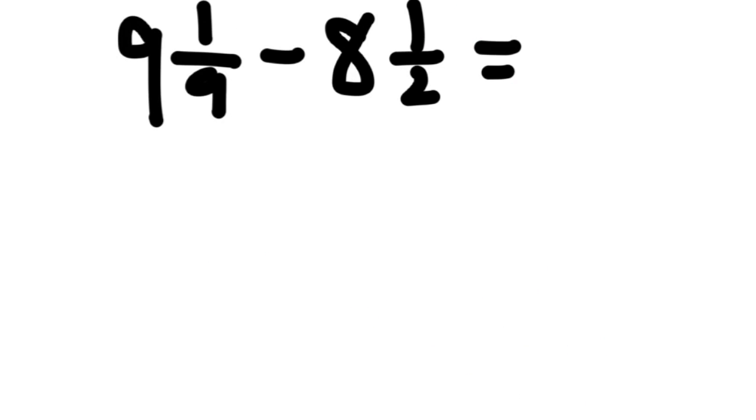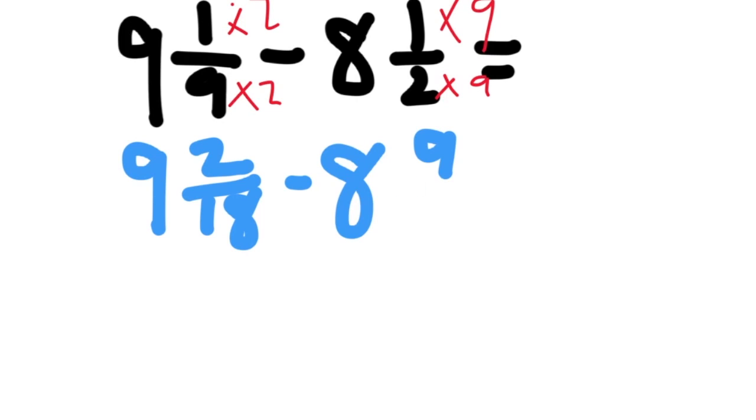9 and 1 ninth minus 8 and 1 half. We've got to find common denominators first, and the common denominator is 18. So now with common denominators, we have 9 and 2 eighteenths minus 8 and 9 eighteenths.